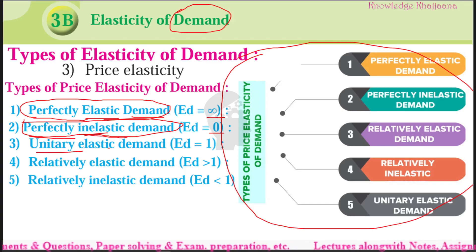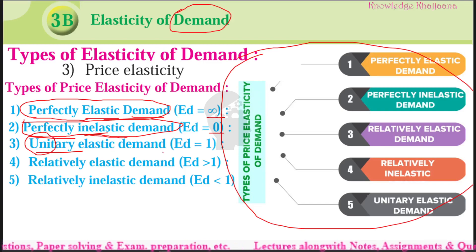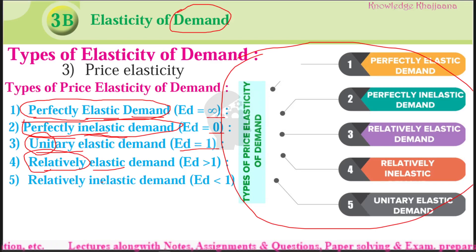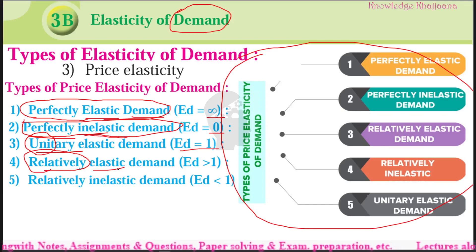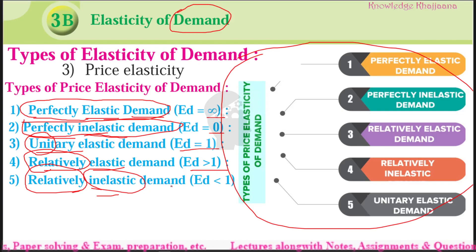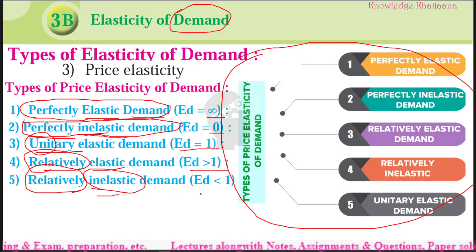Third is unitary elastic demand. Unitary means same — with the same amount of change in the price, there is the same amount of change in the demand. That is called as elasticity of demand equal to one. Fourth is relatively elastic demand — comparatively elastic. When the change in the price is lesser, but compared to it, demand is more — that is called as elasticity of demand is more than one. Fifth is relatively inelastic demand — demand is going to be static compared to the change in the price, comparatively inelastic. That is elasticity of demand less than one.